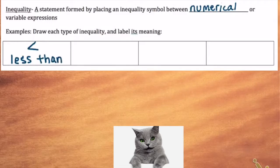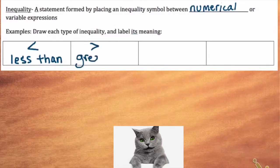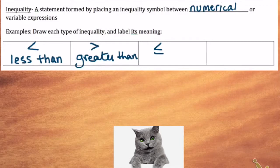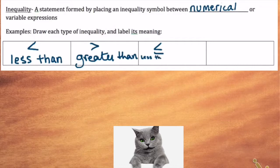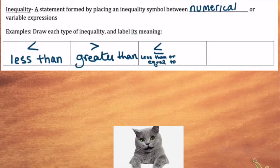Just remember that the less than symbol is the one that kind of looks like a squished L. We have the greater than symbol. And we have less than or equal to — it's got the less than with the equal sign kind of underneath it, so they're combined. And then we have greater than or equal to.